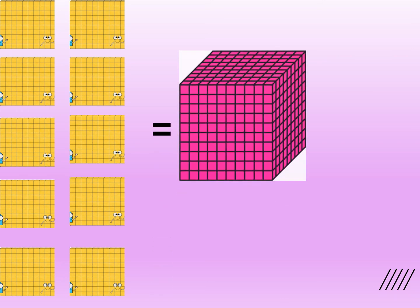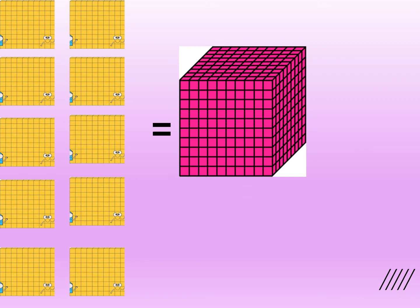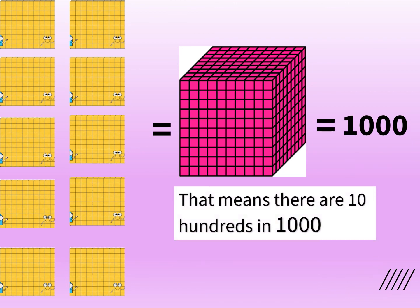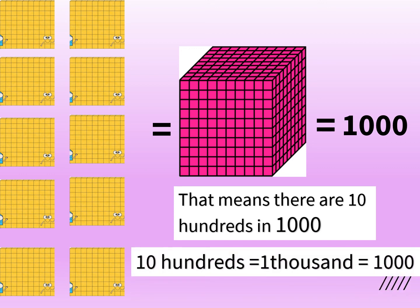On the screen we can see that there are 10 grids of 100. Now these 10 grids have been joined together to make this pink grid. This pink grid represents 1000. That means there are 10 hundreds in 1000. 10 hundreds is equal to 1000.